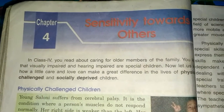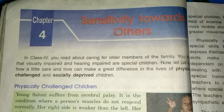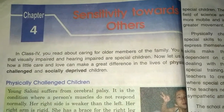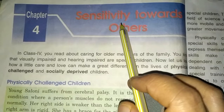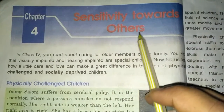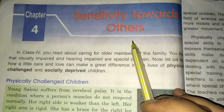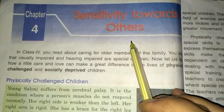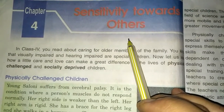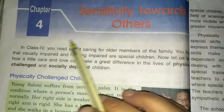Good morning dear students, welcome to the Social Science class. As we all know, we have started Chapter 4, which is called 'Sensitivity Towards Others.' Sensitivity means feeling of love, care, and support towards others. We have already started this chapter and I've shared one video related to the gist of the chapter. Today we are going to start the chapter with the reading section.